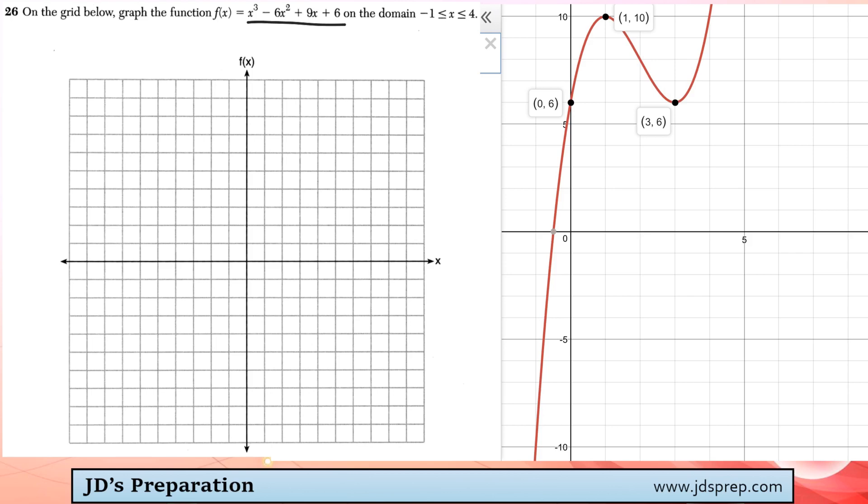So obviously you'd have to play around with the windows a little bit, because we are focusing on the domain where x is between negative 1 and positive 4. So we can see I've already highlighted some important points, and those are ones we'll want to label when we graph this ourselves.